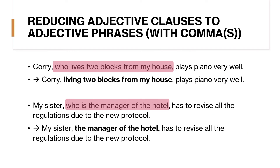Reducing adjective clauses to adjective phrases with commas. Example 1: 'Corrie, who lives two blocks from my house, plays piano very well' becomes 'Corrie, living two blocks from my house, plays piano very well.' Example 2: 'My sister, who is the manager of the hotel, has to revise all the regulations due to the new protocol' becomes 'My sister, the manager of the hotel, has to revise all the regulations due to the new protocol.' Commas are used both in the clause and in the phrase. Remember: a phrase that is the same as the noun modified is called an appositive.